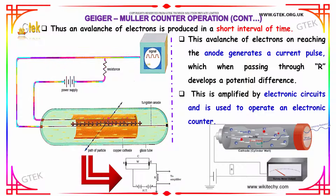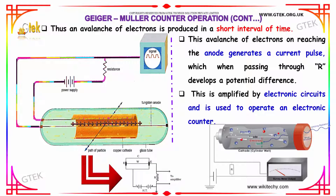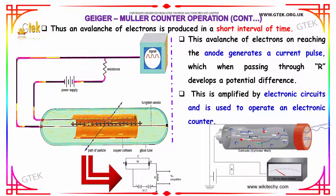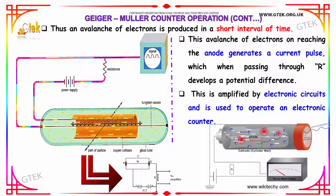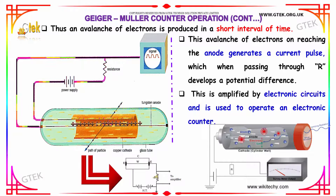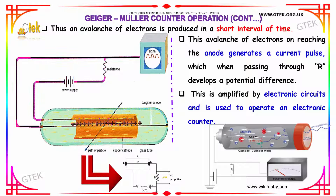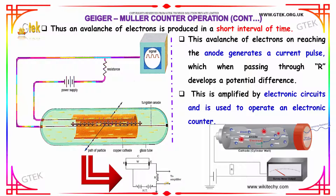Thus an avalanche of electrons is produced in a very short interval of time. This avalanche of electrons on reaching the anode generates a current pulse, which when passing through R develops a very high potential difference. This is amplified by the electronic circuit and is used to operate an electronic counter.